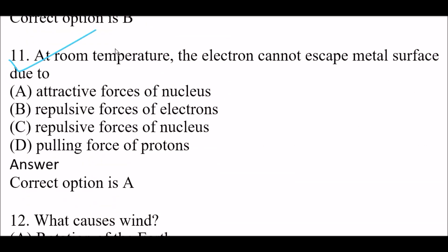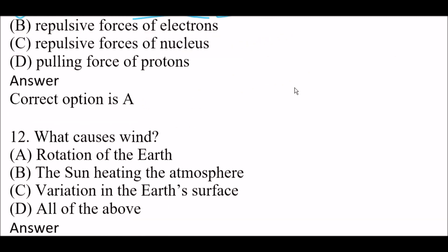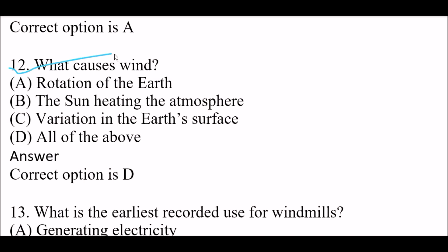Next question: at room temperature, electrons cannot escape the metal surface due to — Option A: attractive forces of the nucleus. Option B: repulsive forces of electrons. Option C: repulsive forces of nucleus. Option D: pulling forces of protons. Right answer is Option A — attractive forces of the nucleus. At room temperature, electrons cannot escape the metal surface due to attractive forces of the nucleus.